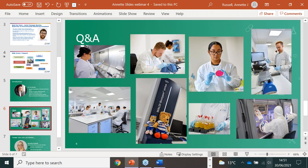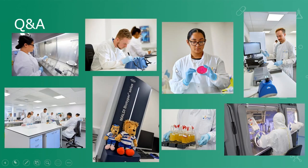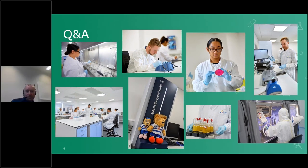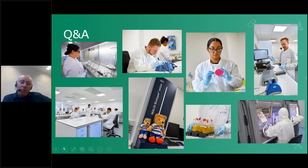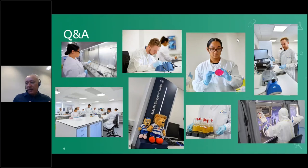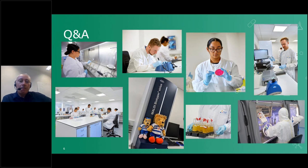We have a few questions. Kate asks: for recirculatory systems, is there a standard make-up of air in terms of percentage — for example 80/20 or 90/10? My understanding is that 80/20 is the most common, but it will vary depending on the facility design and the age of the facility. Generally, the more air you can circulate, the lower the particle challenge you're putting back into the HEPA filters, which can help prolong their life.